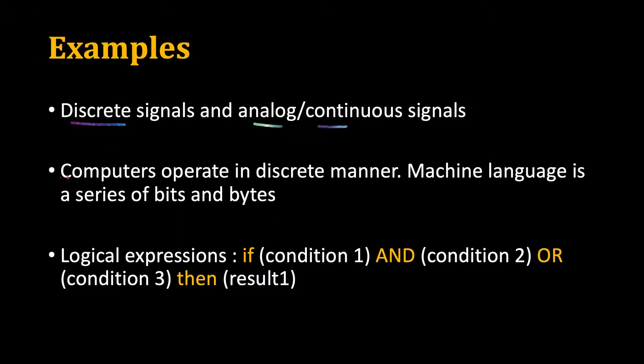We see that computers operate in discrete manner. Our machine language is a series of bits and bytes, and we know that a bit just stores either 0 or 1. Every bit will store either 0 or 1, and 8 bits together will form 1 byte.